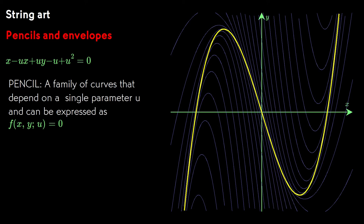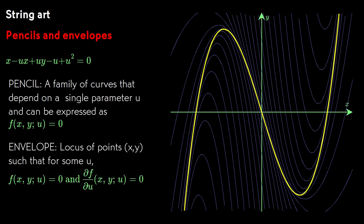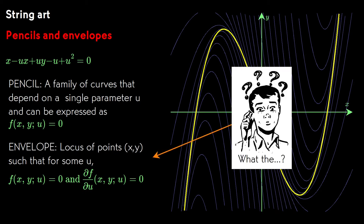It's the locus of all the x y coordinates for which the function that defines the pencil and its partial derivative with respect to the parameter are both zero. This definition is somewhat mysterious. We really need to take a harder look at where it comes from.